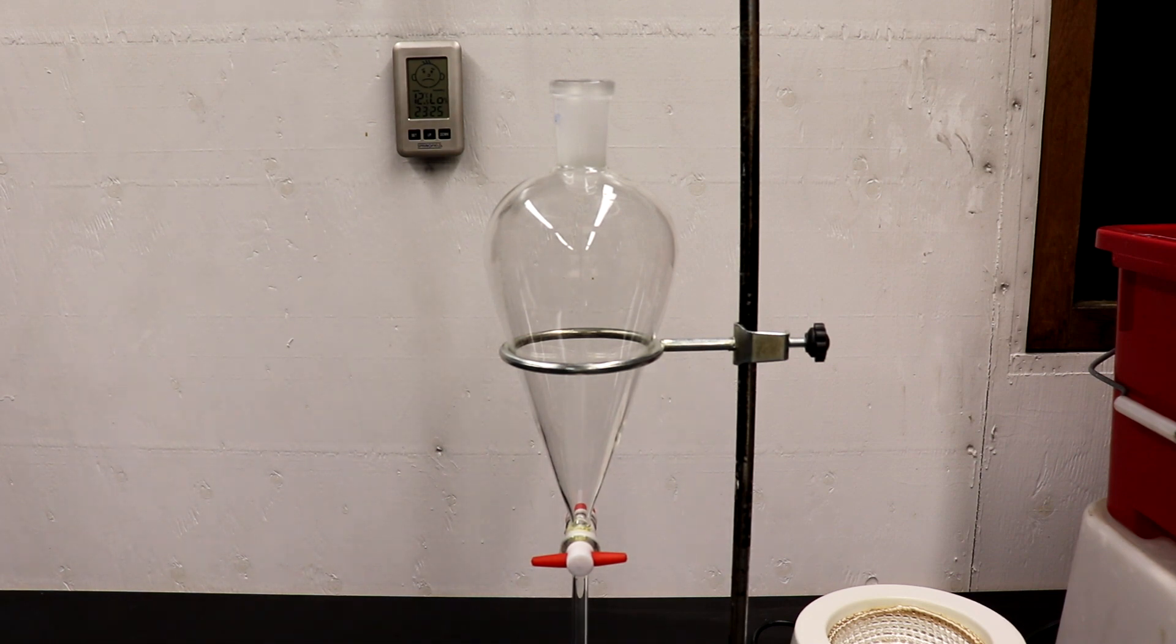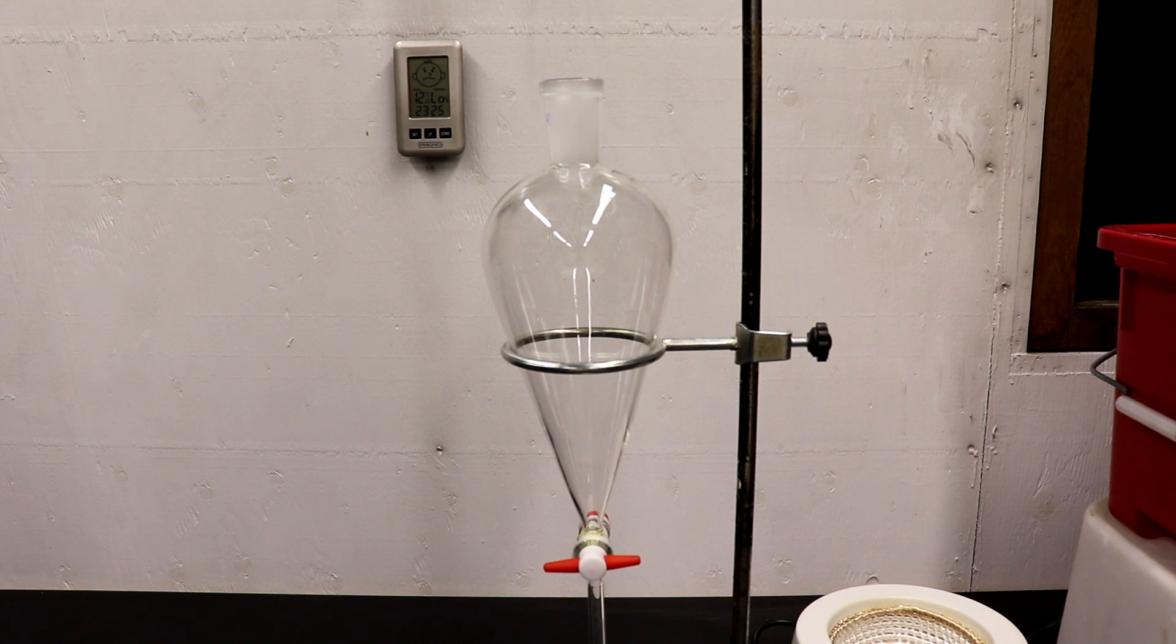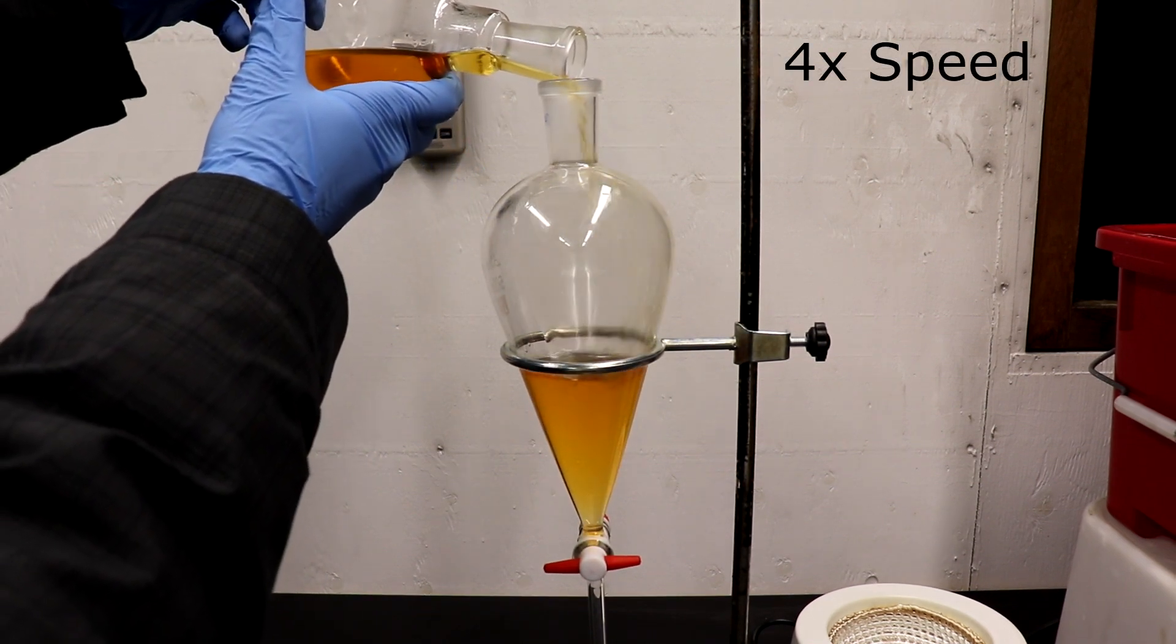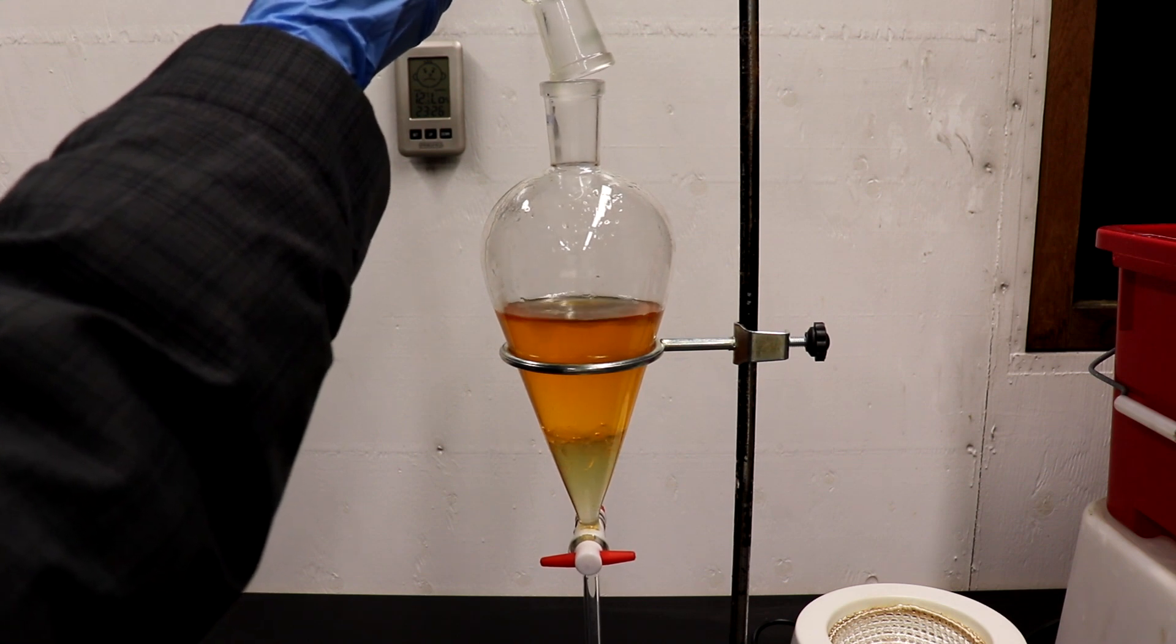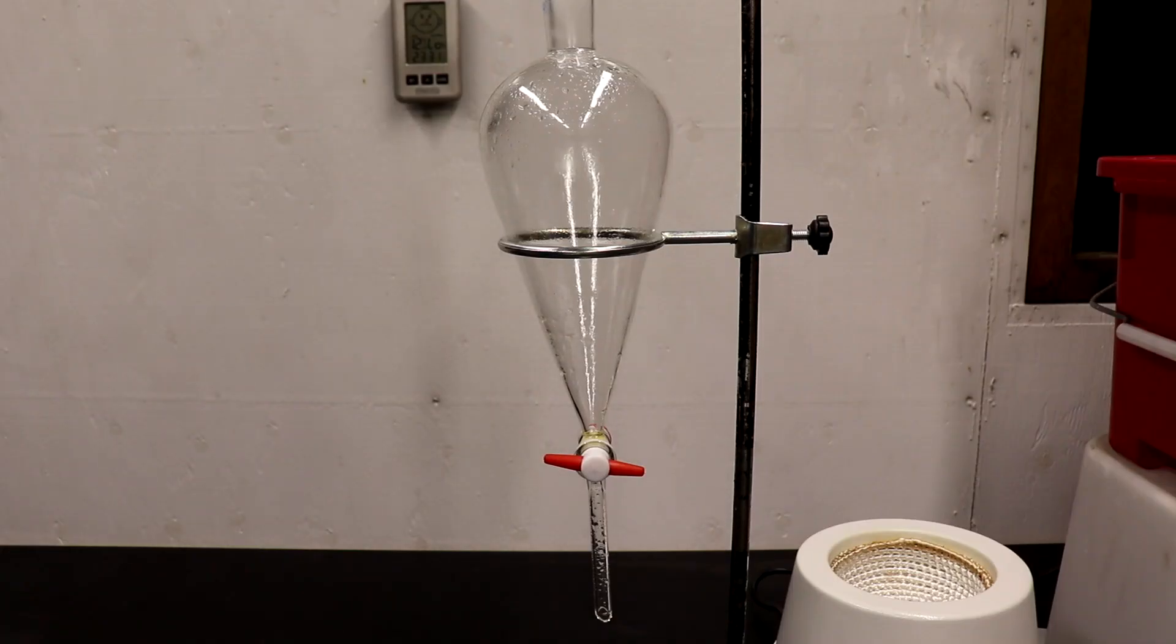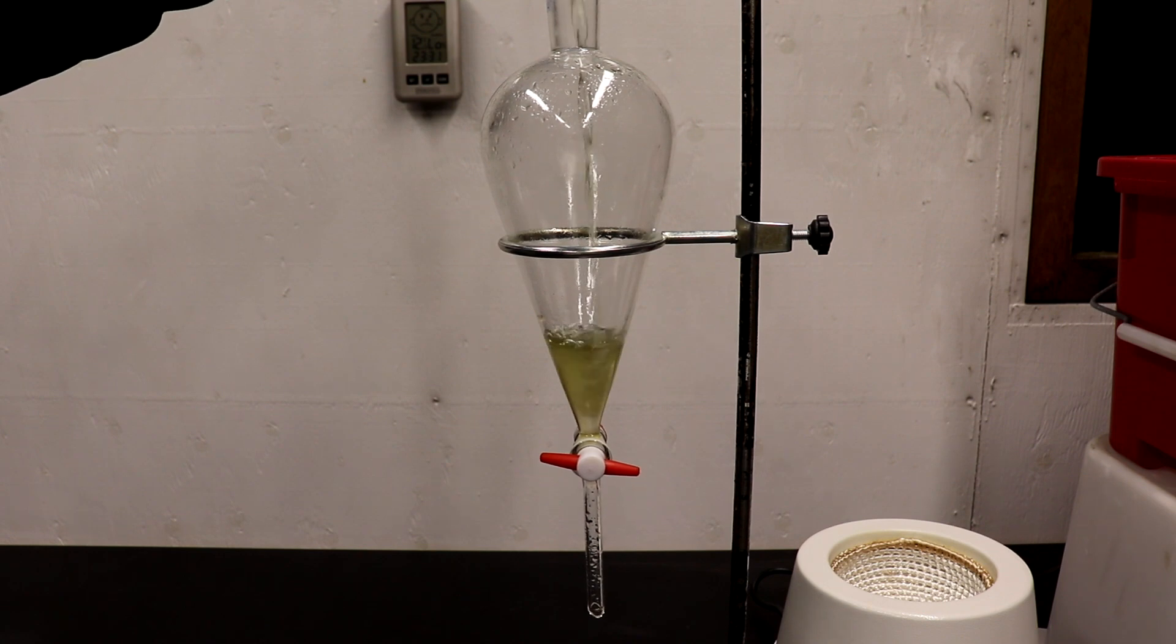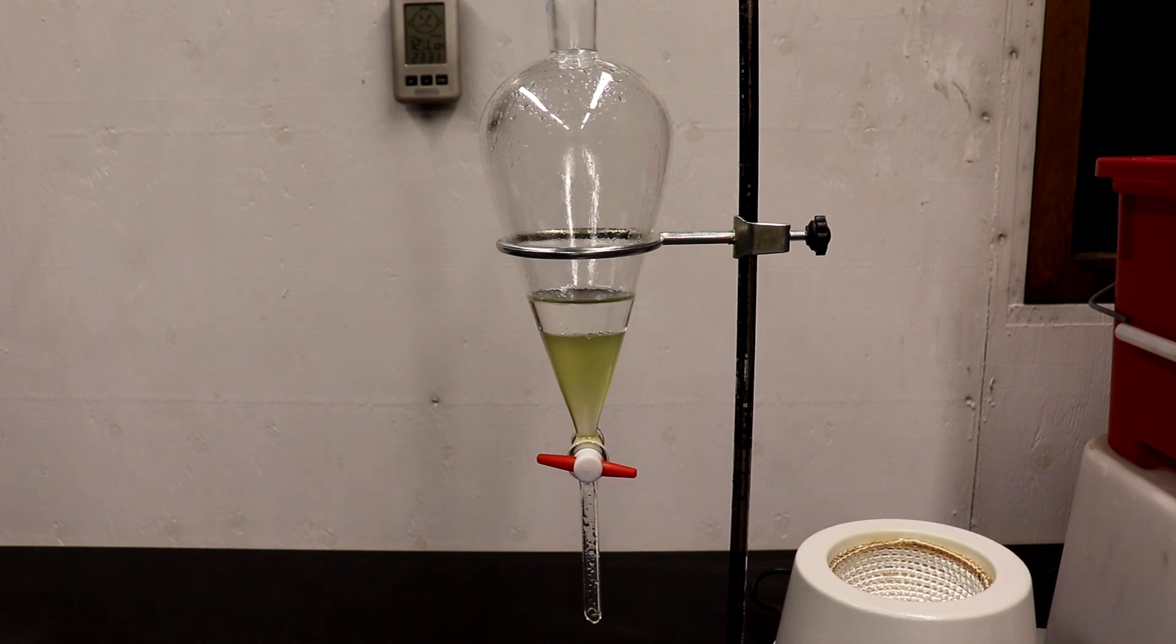Now I'm going to transfer the aqueous layer and the 1,4-dibromobutane layer into a separatory funnel. Be careful to make sure the stir bar doesn't fall in. We'll let those layers separate and drain off the lower 1,4-dibromobutane layer. Now I'm going to wash the crude product with an equal volume of concentrated hydrochloric acid, then I will wash the product with 30 ml of water, then 30 ml of 5% sodium bicarbonate solution, and then finally another 30 ml of water.